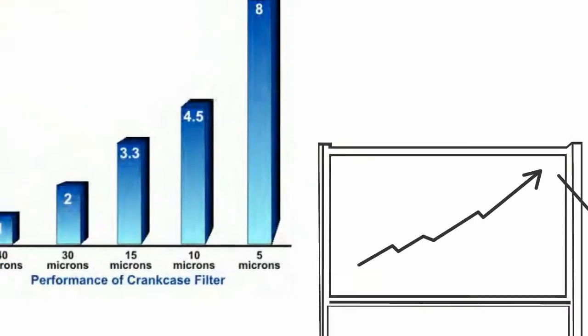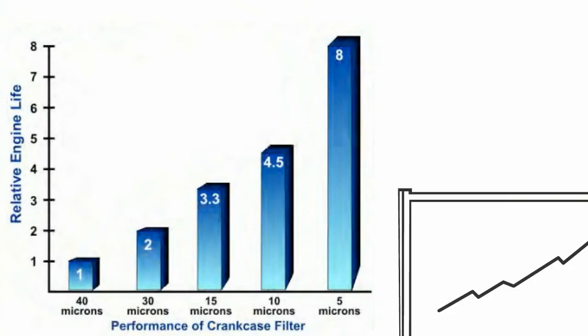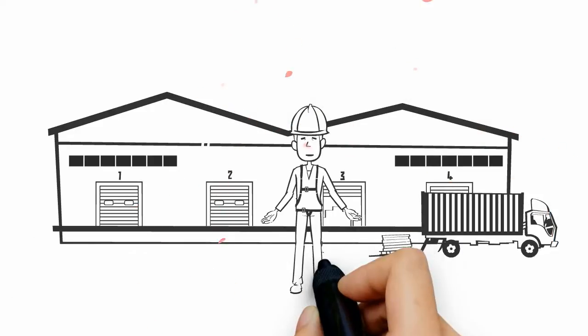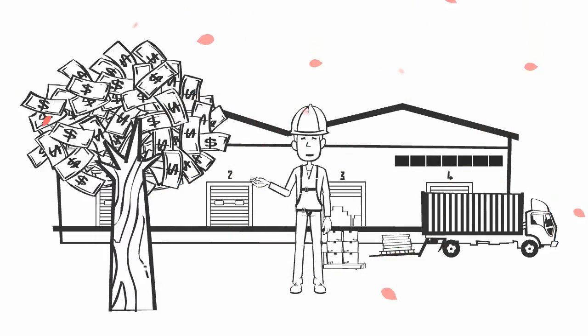Several studies show that equipment lifespan is heavily impacted by the number of particles and moisture levels in the oil. Let's see how lubricants get contaminated and how you can save millions by preventing it.